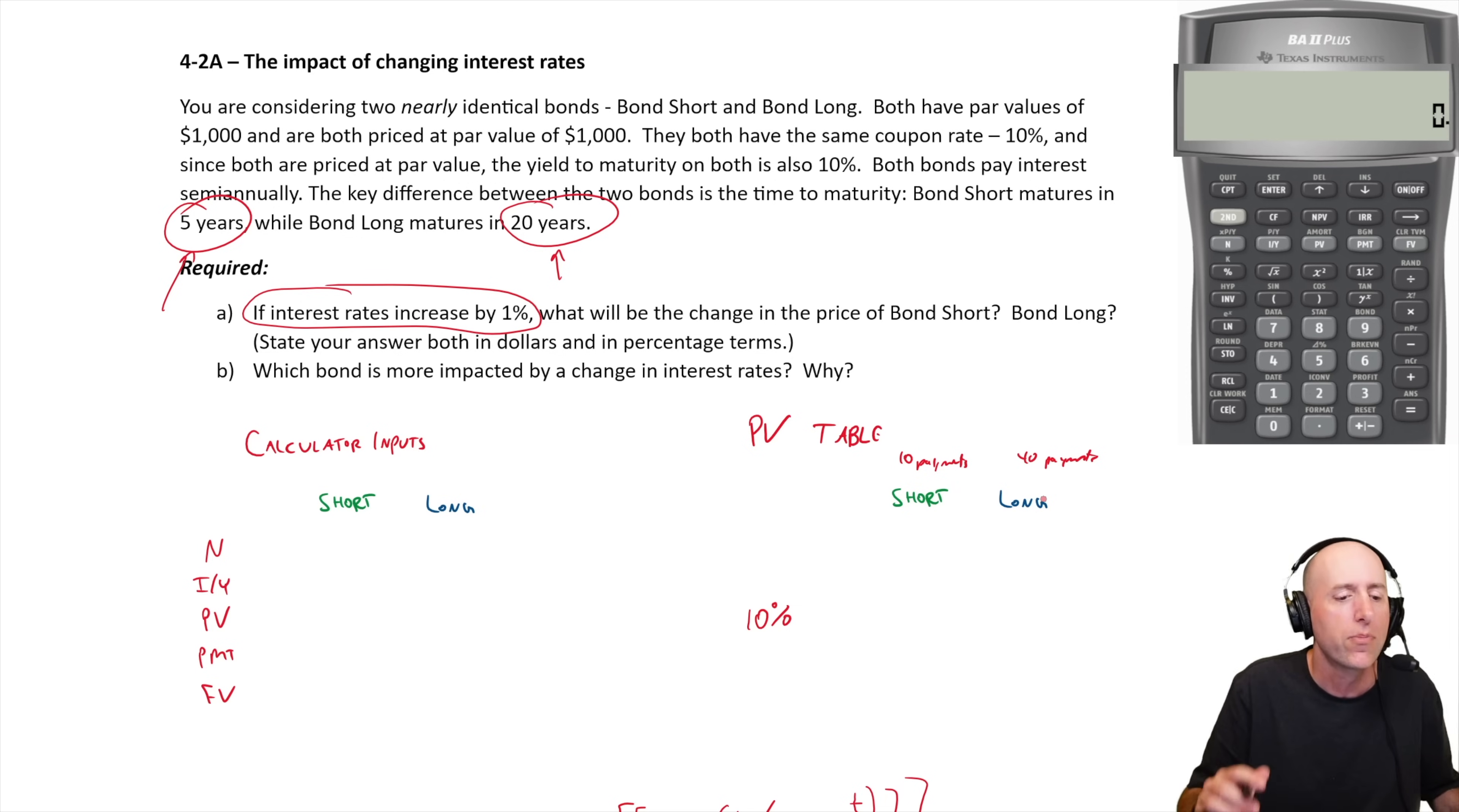You're considering two nearly identical bonds, Bond Short and Bond Long. Both have par values of a thousand dollars and both are priced at par value of a thousand dollars. They both have the same coupon rate, ten percent.